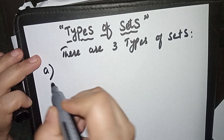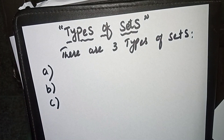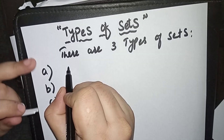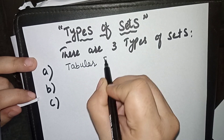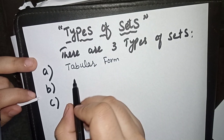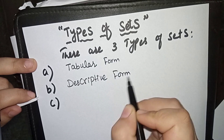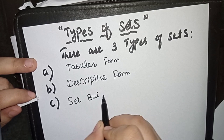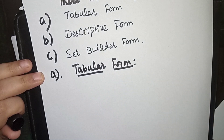There are three types of sets. First I will write the names of these types and then explain all three with examples. The first type is tabular form, the second type is descriptive form, and the third type is set builder form. These three types are very easy to understand, so watch the full video.